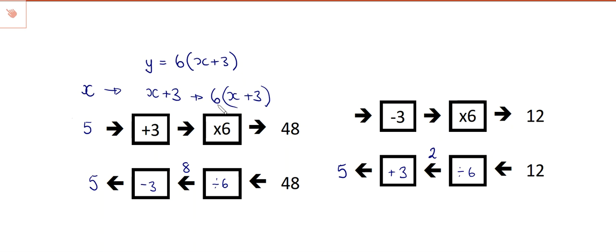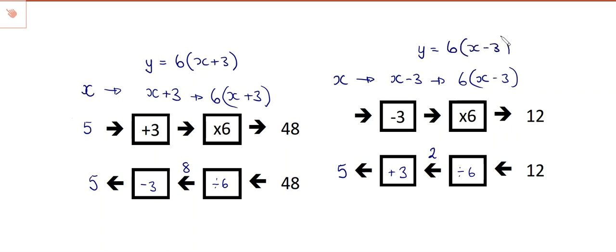Why have I put six at the beginning? Because you times by six — when you times by six you always put the coefficient at the front. Now, if I put x in and the first thing I do is subtract three, that would be x minus three. I then have to do times by six, so it becomes x minus three times six. So it's y equals six times x minus three.